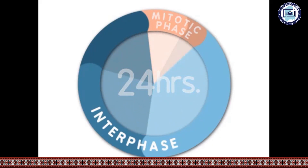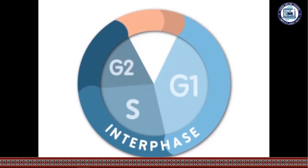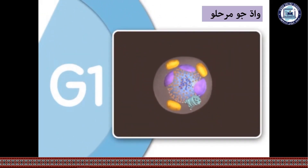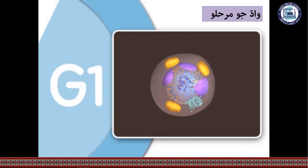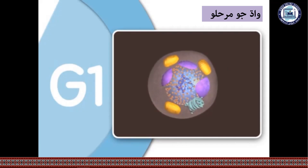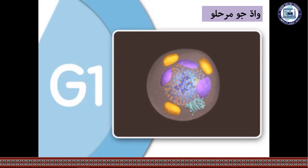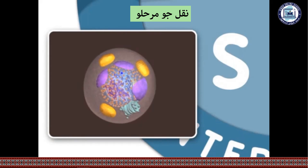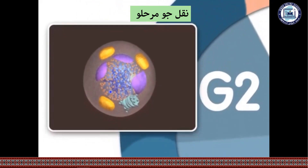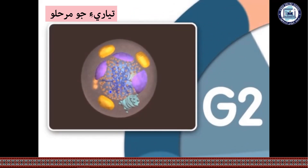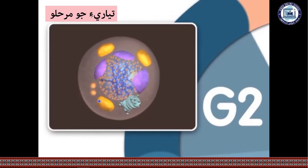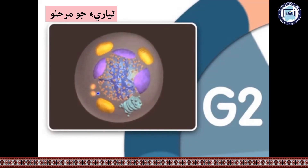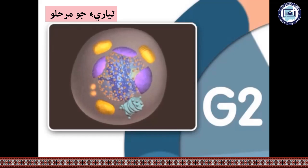So in summary, interphase consists of G1, S, and G2 stages. In G1 the cell grows and prepares. In S phase DNA is replicated using chromatin. In G2 the cell completes preparation for division with a large-scale build-up of cell components.